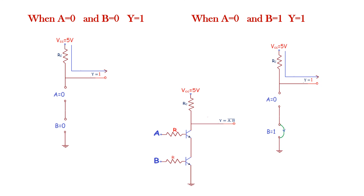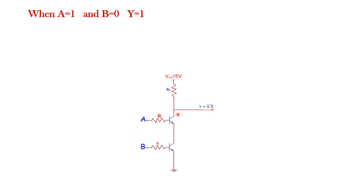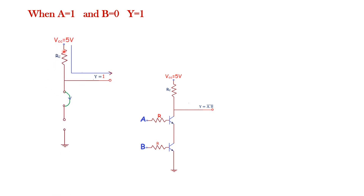Next condition: when A equals 0 and B equals 1, the output is still 1. A equals 0 means the first transistor is not conducting and is open. B equals 1 means the second transistor is conducting. However, there is no current flow through the circuit because the first transistor is open-circuited. So VCC is directly connected to Y and the output equals 1.